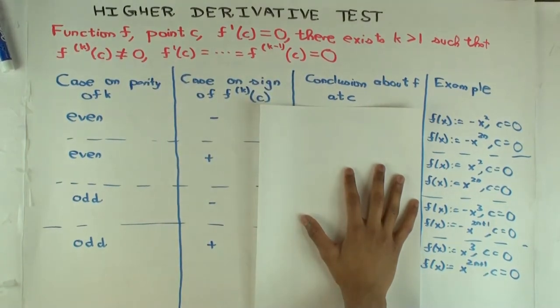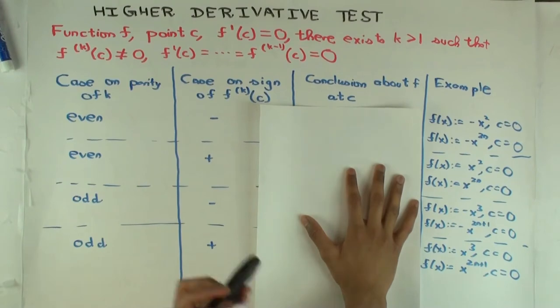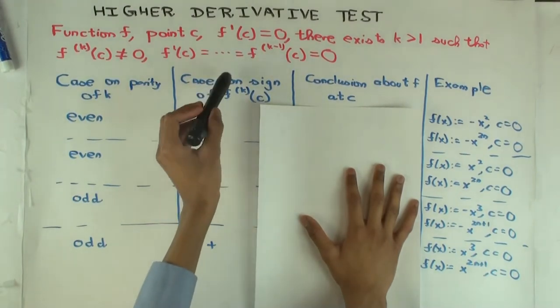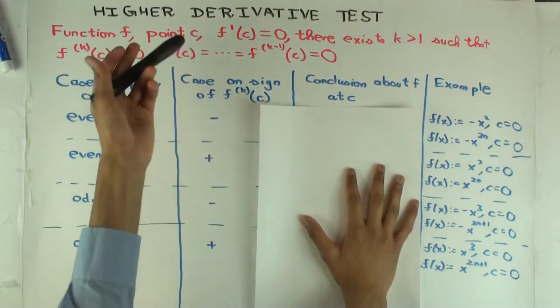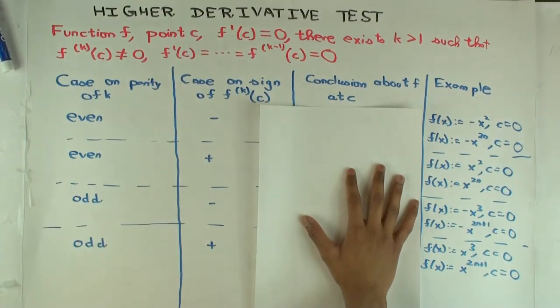So k is at least two. If k is two, this should just become the second derivative test. If k is greater than two, then the second derivative test would be inconclusive, right? Because then that means f double prime c is zero. But you can still use this higher derivative test to figure out whether you have a local max or min or neither.